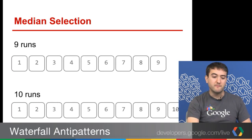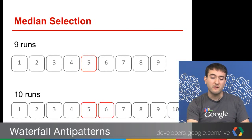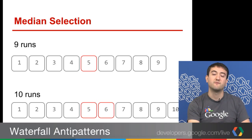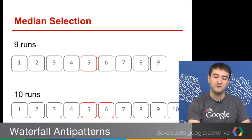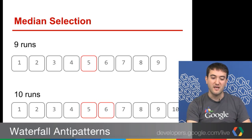I mentioned that nine runs is better than ten runs. When you have nine runs, it's an odd number. When you take the median of nine runs, you're left with the fifth one in the series. As opposed to ten runs, you're left with five and six in the middle, and you're left with some sort of decision about which one to take. So when you have nine runs, you're always going to have one test run to pick, and there's no ambiguity.